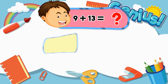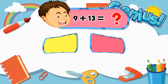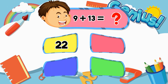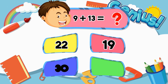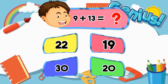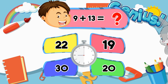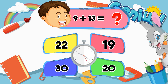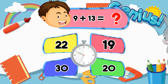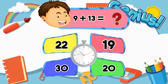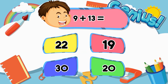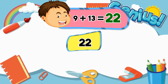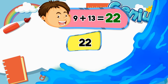What is 9 plus 13? 22, 19, 30, 20. Answer: 22.